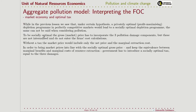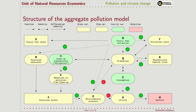Thinking back to the flow chart: we are here, and the choice to be efficient is where marginal benefit equals marginal cost. We can see that the cost is evaluated at the price of capital, and the marginal reduction is evaluated at the price of the pollution stock. We are going to see in a moment what the price of the pollution stock is — it is the price of a pollution unit.